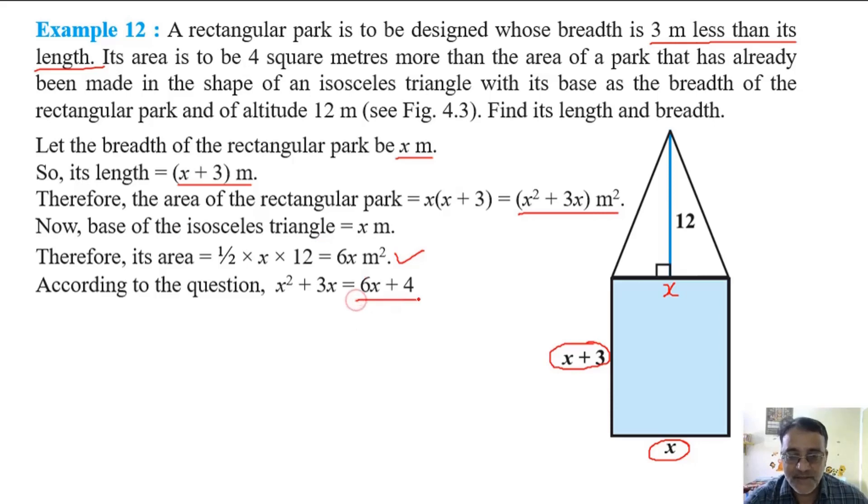Now we will shift both of this to this side. So we will get x square minus 3x minus 4 equals 0. Now 4 should be split such that the difference will be 3. So it is very easy. 4 and 1 will be there.